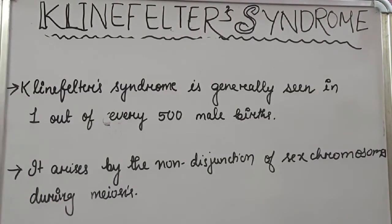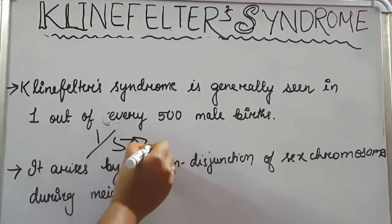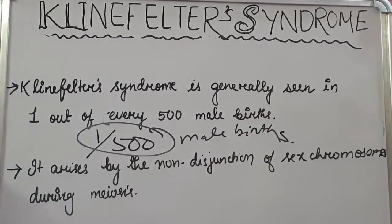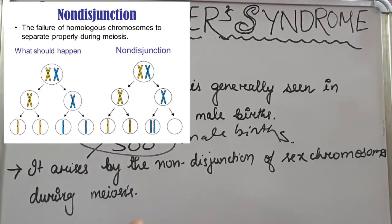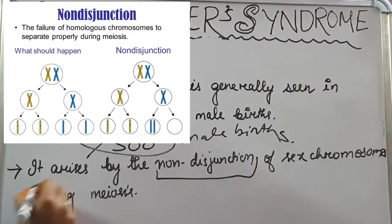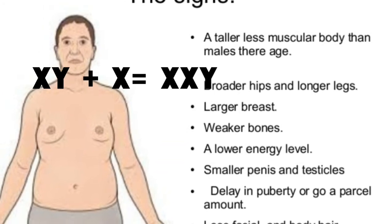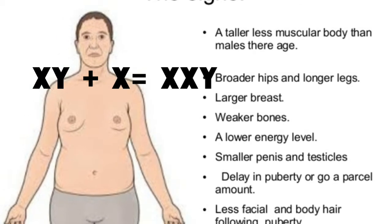Klinefelter syndrome is generally seen in one out of every 500 male births. It arises by the non-disjunction of the sex chromosomes during meiosis, as shown in the picture. Usually males carry the XY chromosome, but in Klinefelter syndrome an extra X chromosome is added, giving rise to feminine characteristics.